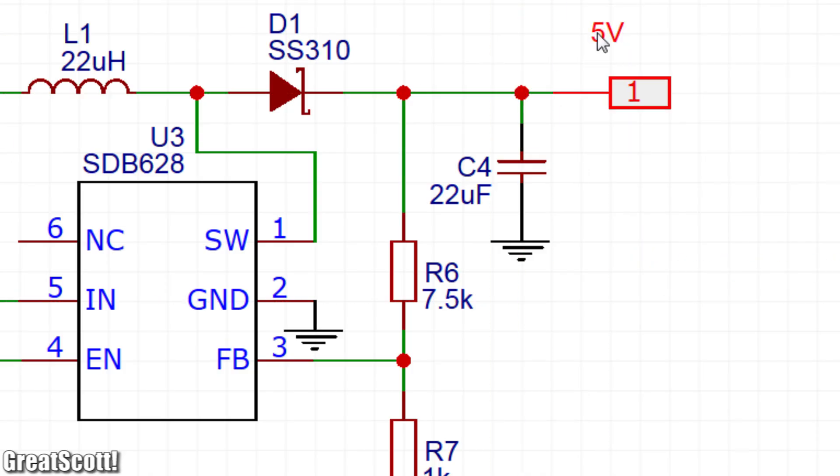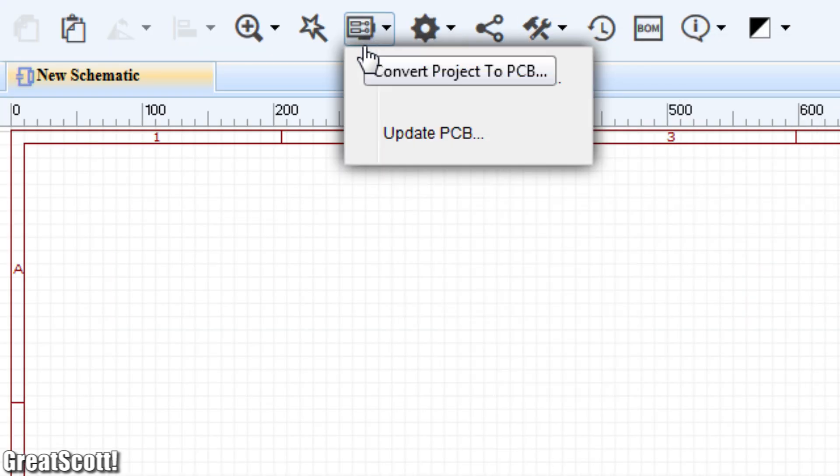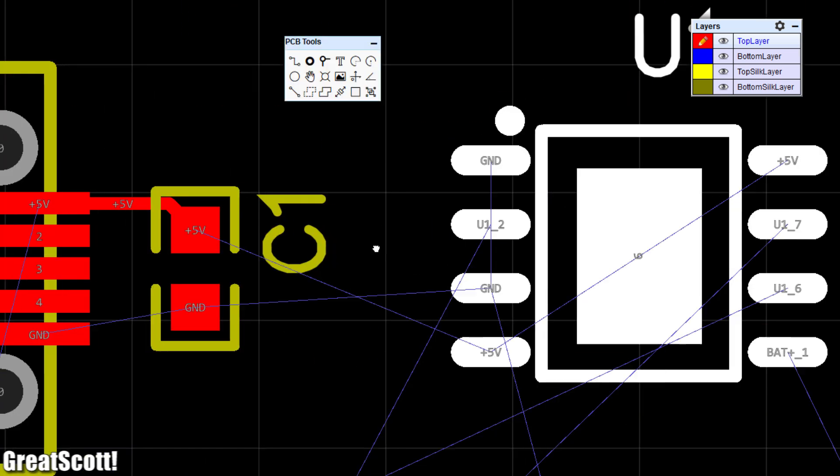And after adding solder pads for the 5 volts and ground outputs, it was time to push the convert project to PCB button and start designing the board layout.